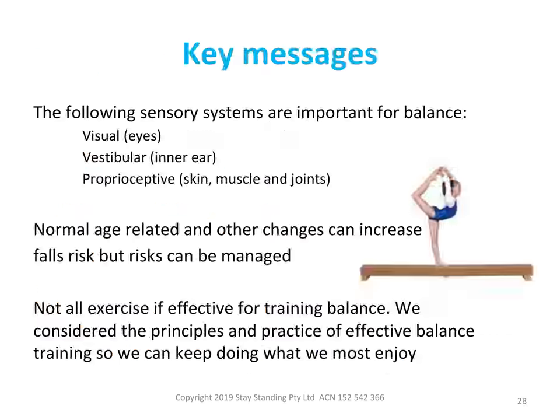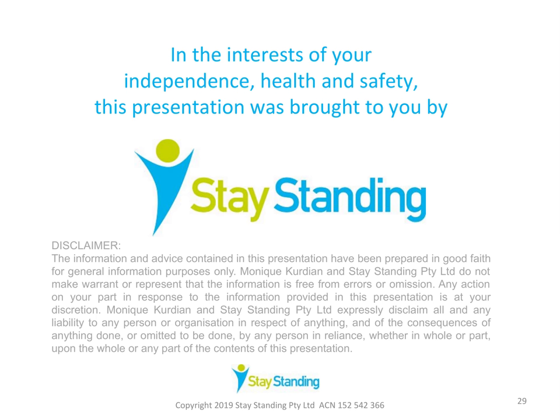Now let's review our key messages from this presentation. We found that the following sensory systems are important for balance: the visual system, which are our eyes; the vestibular system, including our inner ear; and our proprioceptive system, which includes the skin, the muscles and joints, especially of the lower limb. We also learned that age-related and other changes can increase our risk of falling, but that risks can be managed. We also learned that not all exercise is effective for balance training, and we considered the principles and practice of effective balance training so we can keep doing what we most enjoy. Thank you for your attention in this presentation, and I look forward to joining you again for the next presentation.